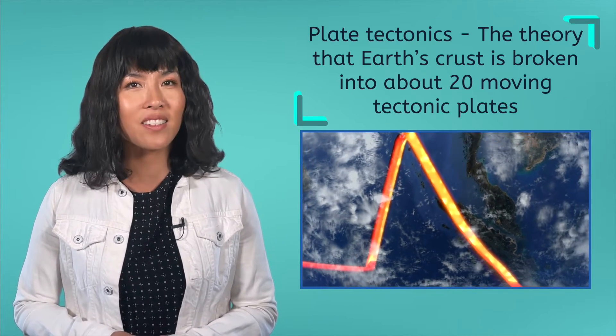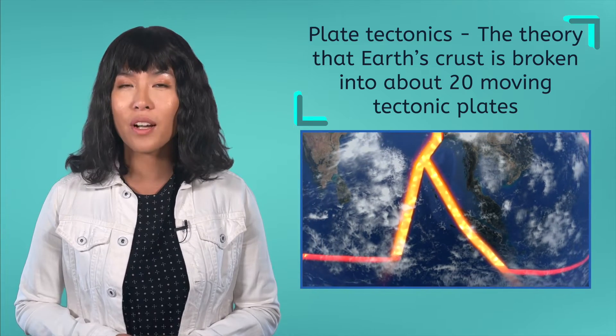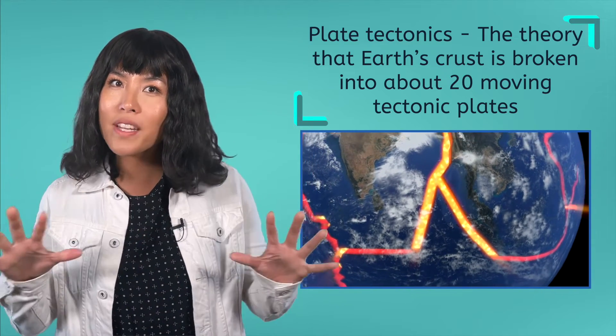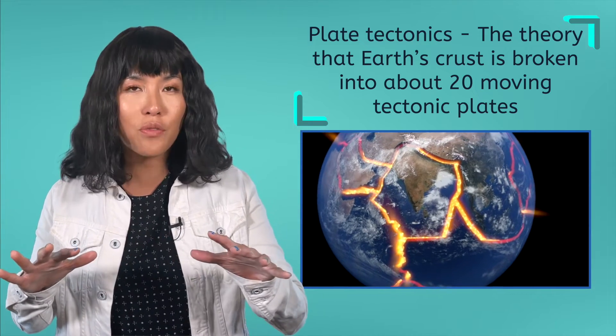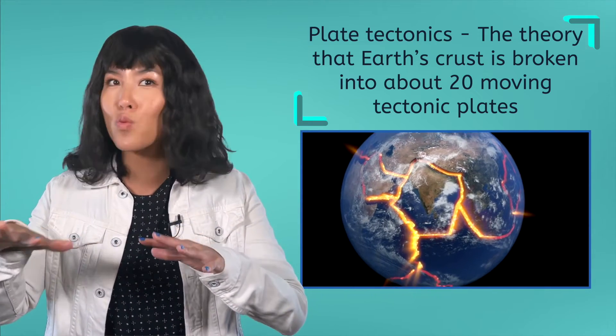Before we jump in, let's review a bit about plate tectonics. The theory of plate tectonics states that the Earth's crust is broken up into about 20 segments, called tectonic plates, that slowly drift around the planet's surface, moving the continents with them.